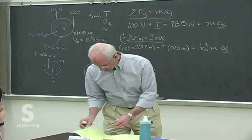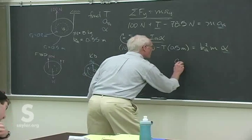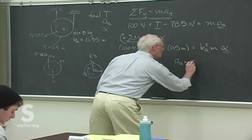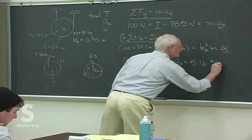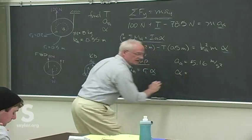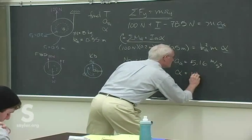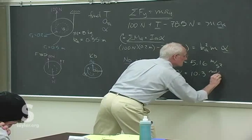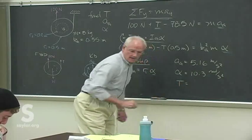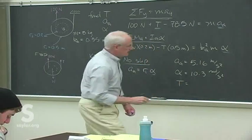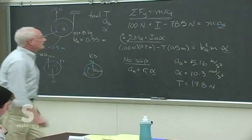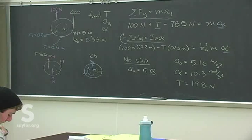The physics is all done — it's now just algebra. The solution gives alpha = 10.3 radians per second squared, and the tension in the line is 19.8 newtons. Notice that the tension is not simply the difference between the applied force and the weight — if it were, there would be no acceleration.